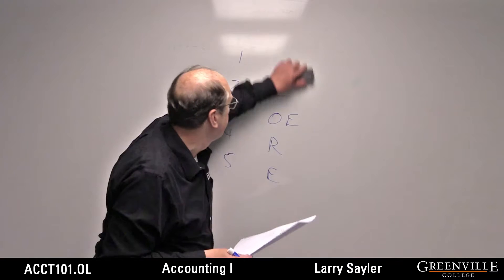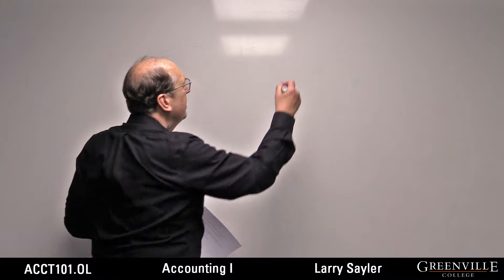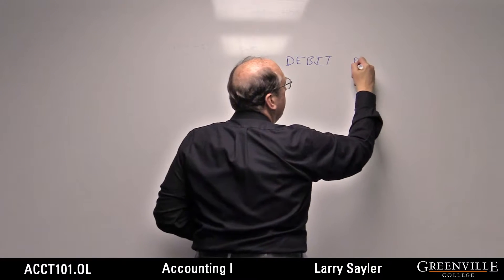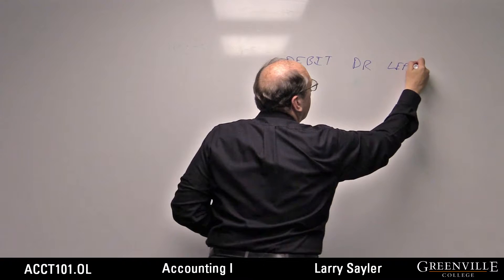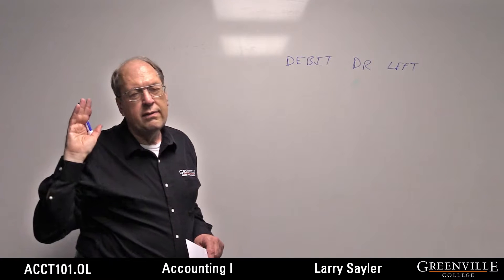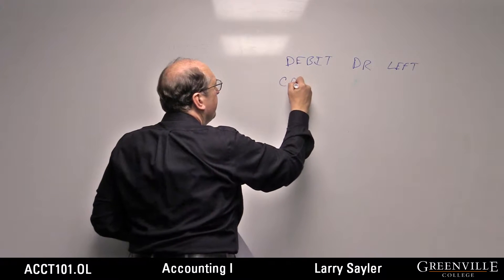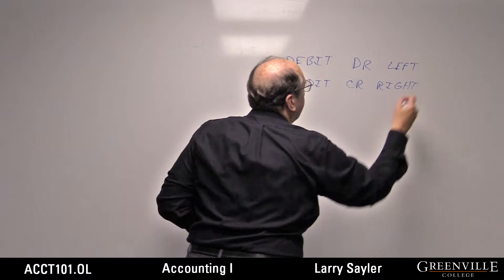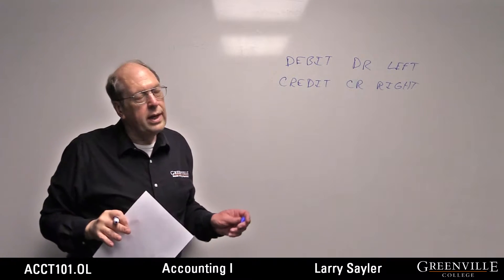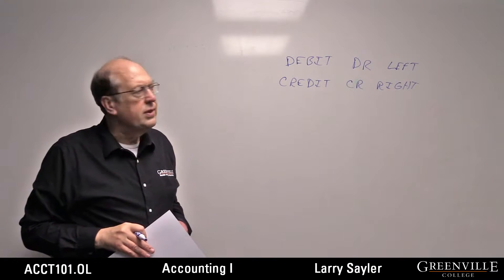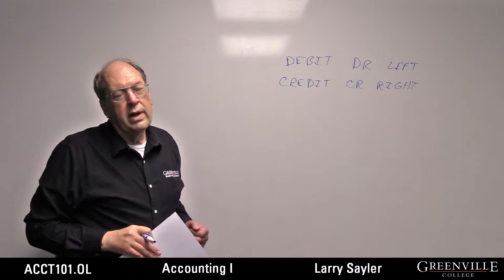Now some new terms: debit and credit. Debit is usually abbreviated DR and means left. When you see or hear the word debit, just think left. Credit is CR, and that means right. Left and right — and you'll be okay. After a while you'll get a better sense of what they mean, but right now know the abbreviations DR and CR, and know left and right.